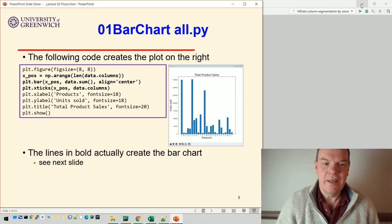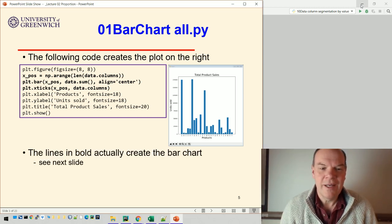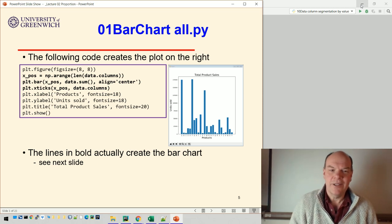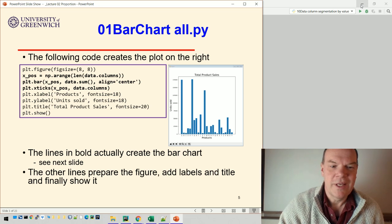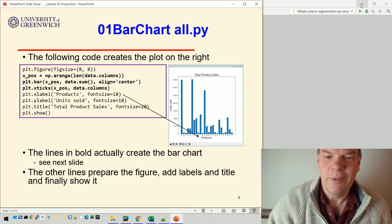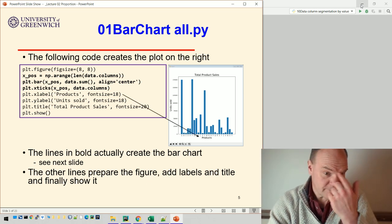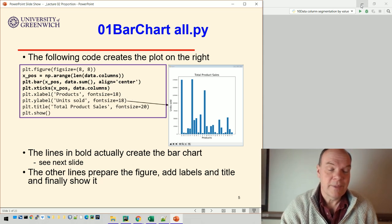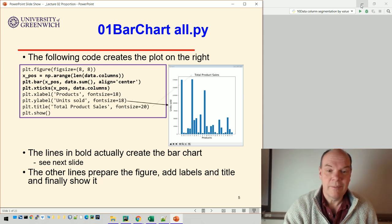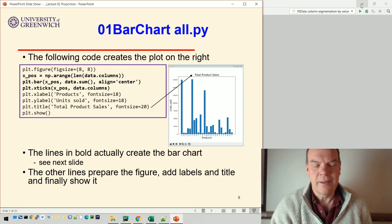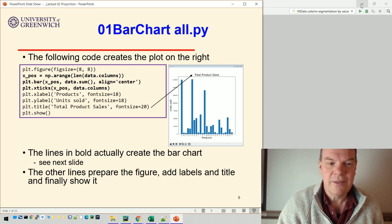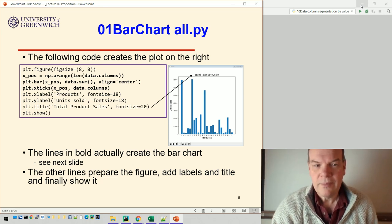But that's all the code we need. In fact, it's only the three lines in bold that are actually creating the bar chart. The rest are just adding information. So you can see we can put a label on the x-axis. Products. We can put a label on the y-axis, and we can put a title at the top. So the things to focus on really are the three lines of code in bold.